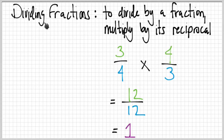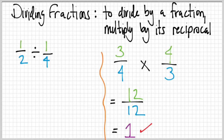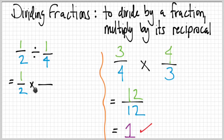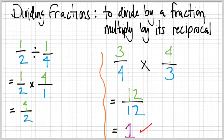Let's go back to dividing fractions with an example: one-half divided by one-fourth. We're dividing by one-fourth, so we multiply by its reciprocal. The one-half stays the same, and instead of dividing by one-fourth, we multiply by four over one. Now multiplying: one times four is four, and two times one is two. So we get four over two.